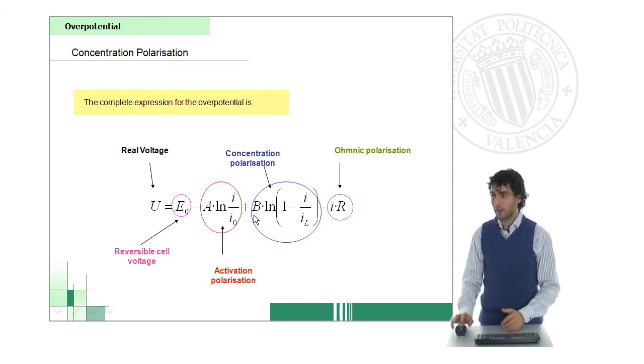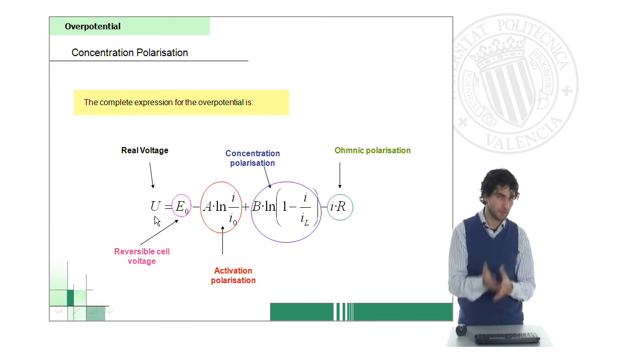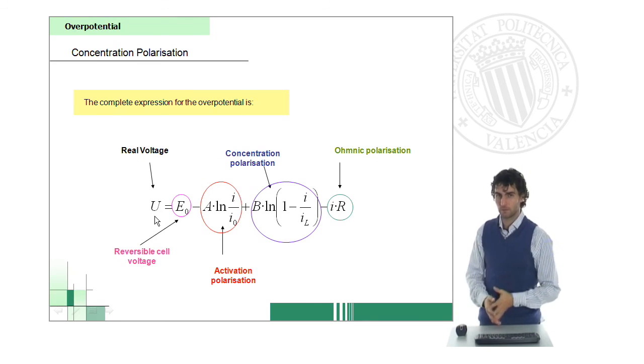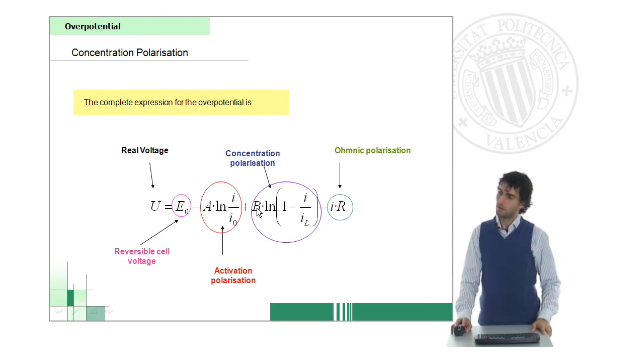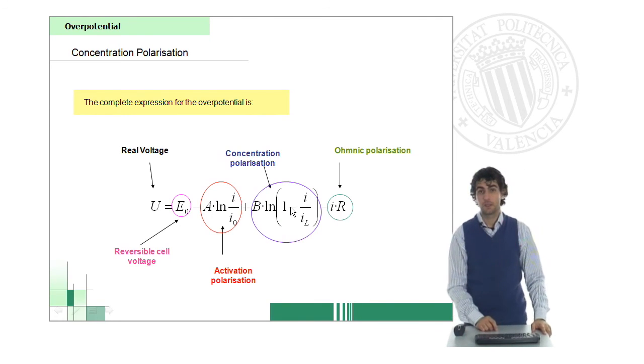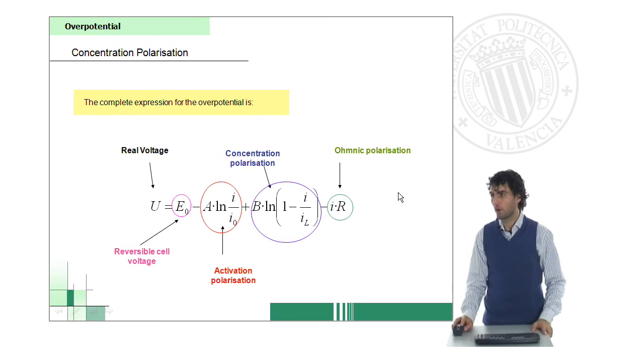Once again, finally what we have is that the real voltage of the fuel cell will be the reversible cell voltage, which is the one that you can read in tables, the one that you're never going to have, unfortunately. Minus a series of terms related to the activation polarization, the concentration polarization, and also ohmic polarization, which is quite simple. Look, this is a positive sign, because this term will always be negative, and should be a logarithm less than one. And so, we will have this value reduced to some extent, depending on these parameters.